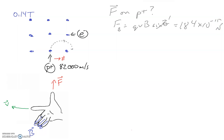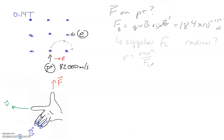Like we talked about last time, this force supplies the centripetal force for the proton to go in a circular path. So what is the radius of the path of the proton? That's just basic mv squared over r using our centripetal expression, so radius equals mv squared divided by Fc, and that Fc is being supplied by Fb. Using the mass of the proton, the speed squared, divided by the magnetic force, I get a radius of around 6.11 times 10 to the negative 3 meters — just over 6 millimeters. You could also calculate the frequency and period of the path.